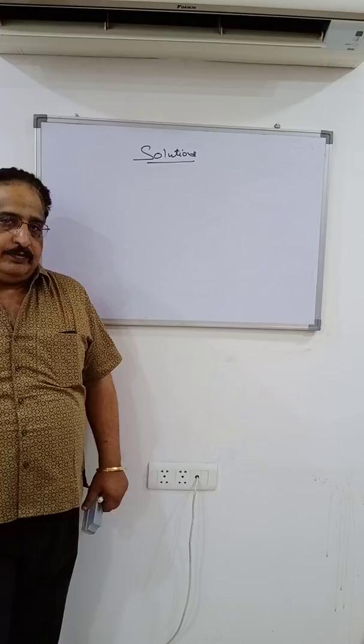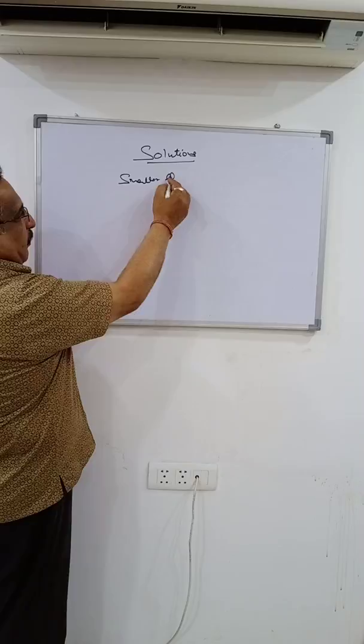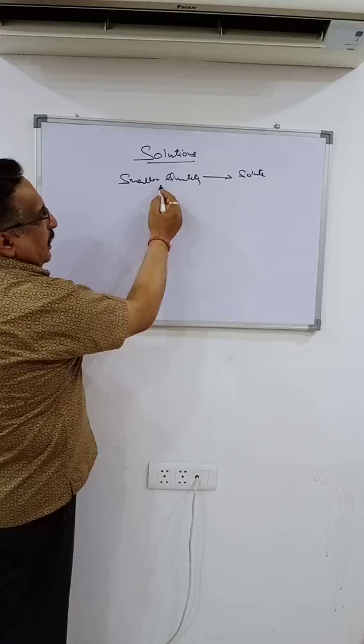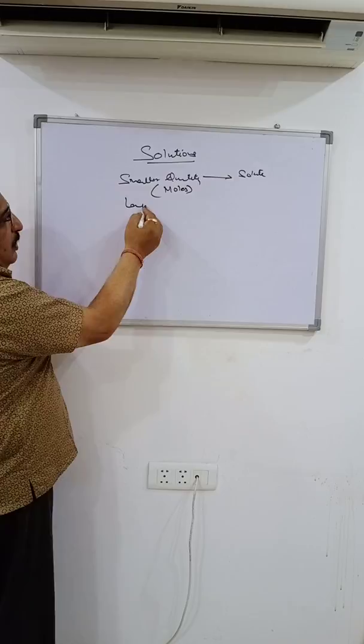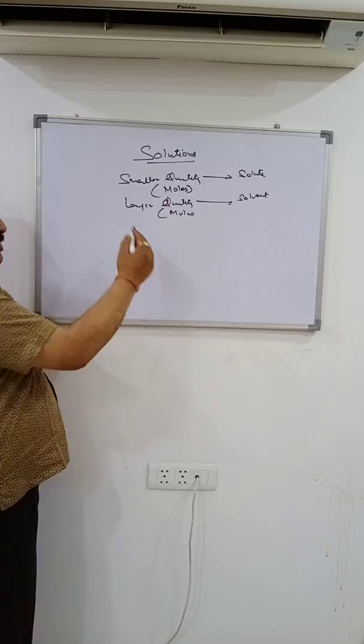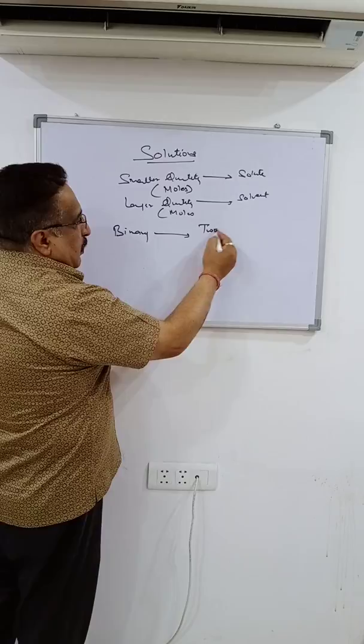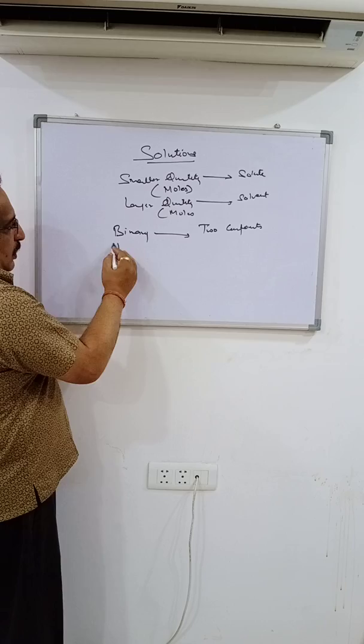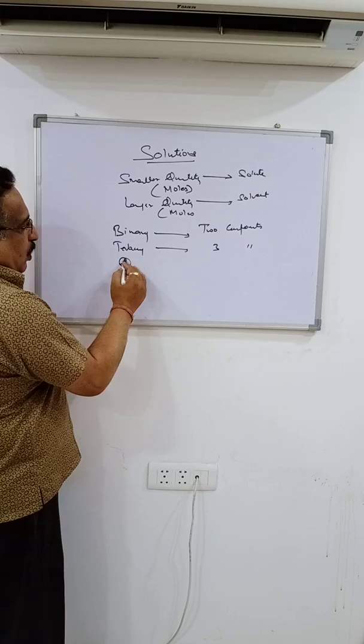The component in a smaller quantity is called the solute — smaller quantity in terms of number of moles. And the component in a larger quantity, in terms of moles, is called the solvent. A solution can be binary if it consists of two components, tertiary if it consists of three components, or quaternary if it consists of four components.